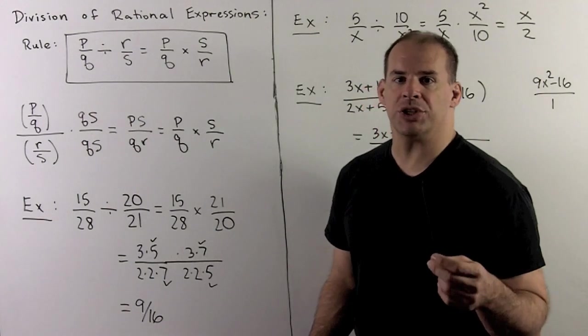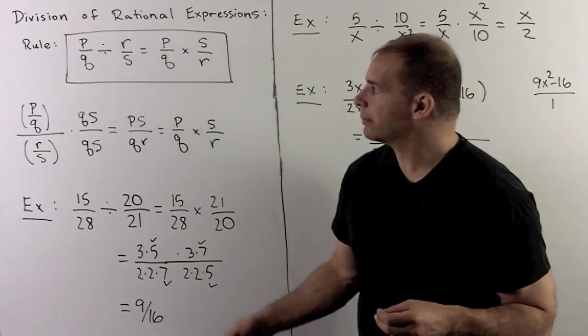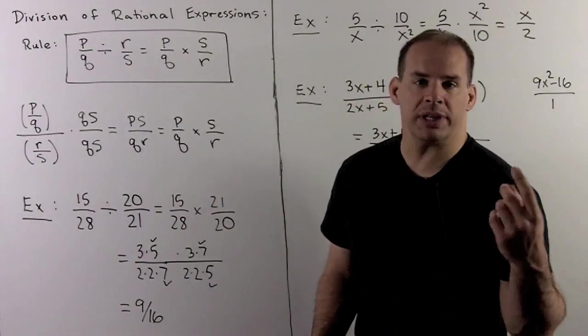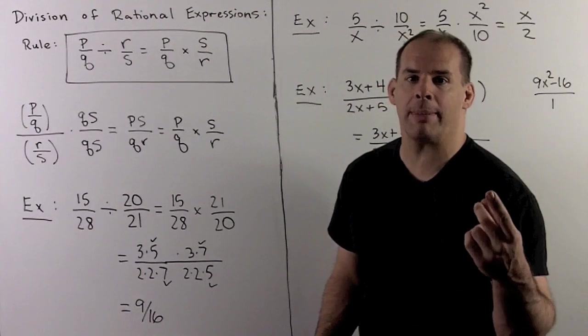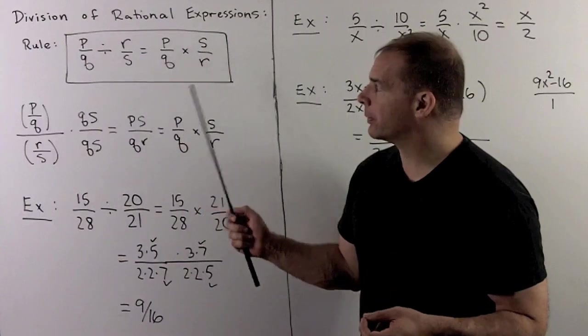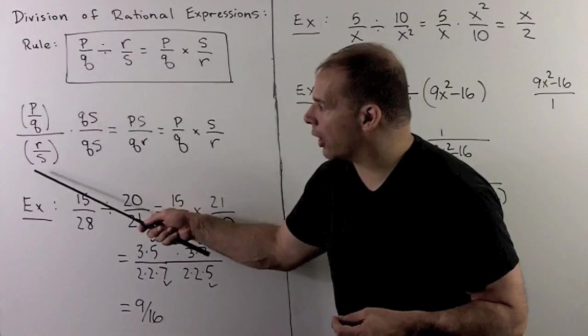For division, procedures are the same. We just use a different rule. That rule is, we take p over q divided by r over s. We take p over q, and we multiply by the reciprocal of r over s, or multiply by s over r. To check this, note here, this is just going to be fractions inside of another fraction.